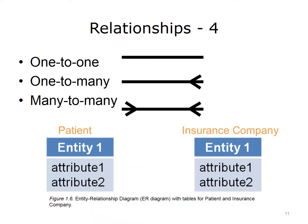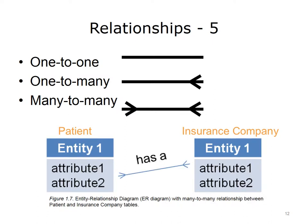If a patient has more than one insurance provider, the relationship is considered to be many-to-many. In this case, an entry in the patient table can be linked to multiple entries in the insurance table, and each entry in the insurance table can be linked to multiple entries in the patient table. Many-to-many relationships are represented by a line with a crow's foot at each end.